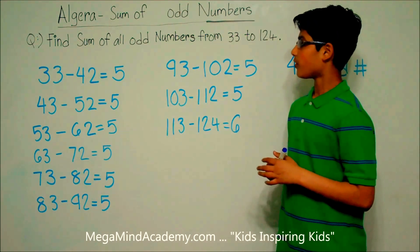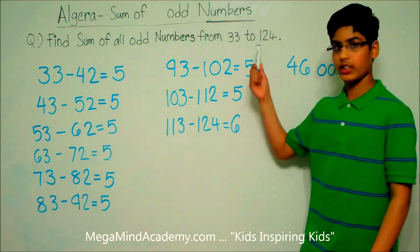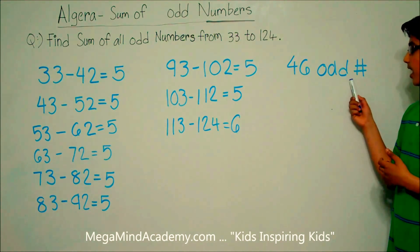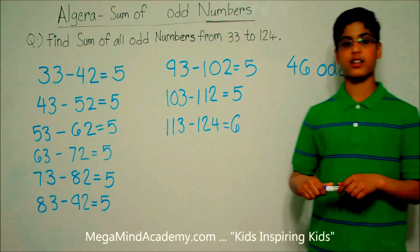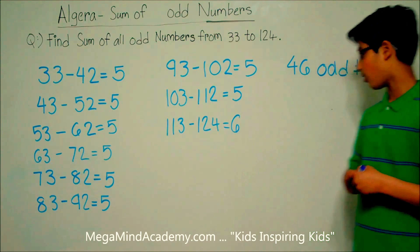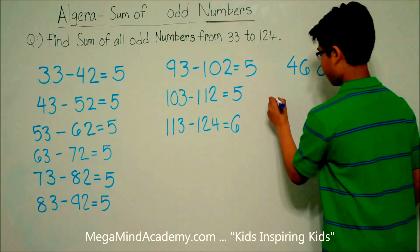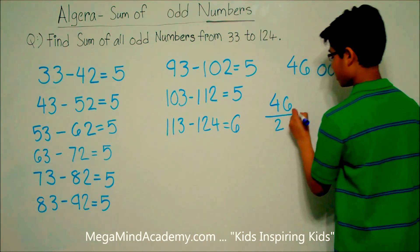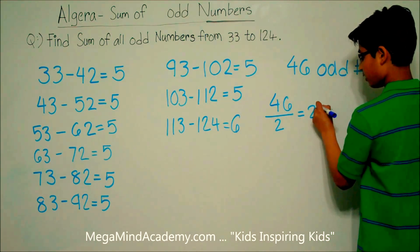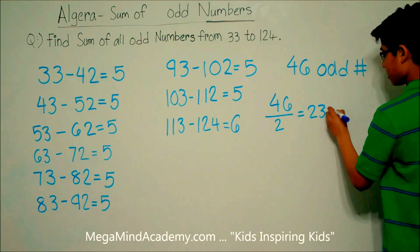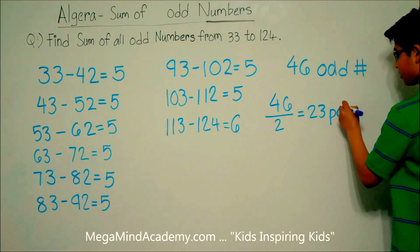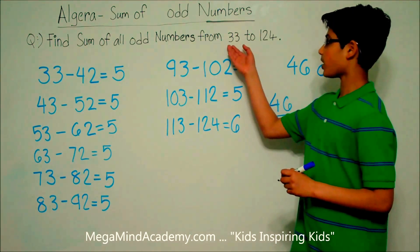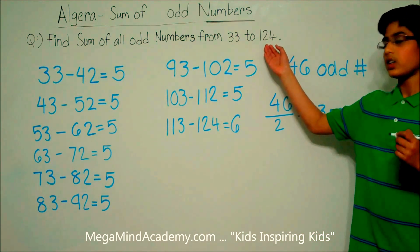Now, to find the sum of all the odd numbers from 33 to 124, we need to divide these 46 odd numbers into pairs of 2. So, 46 divided by 2 is equal to 23. So, this means that there are 23 pairs of odd numbers from 33 to 124.